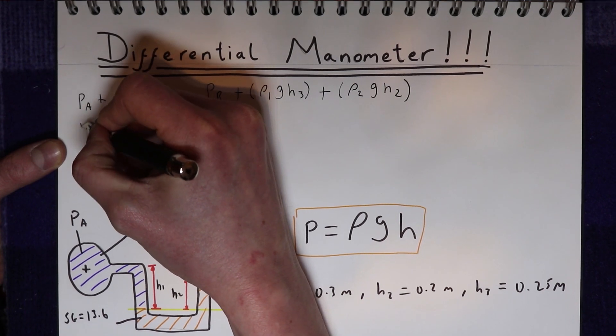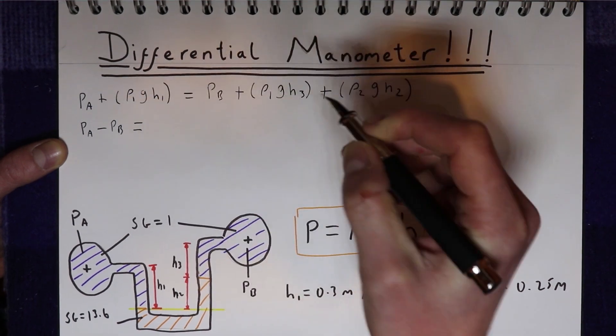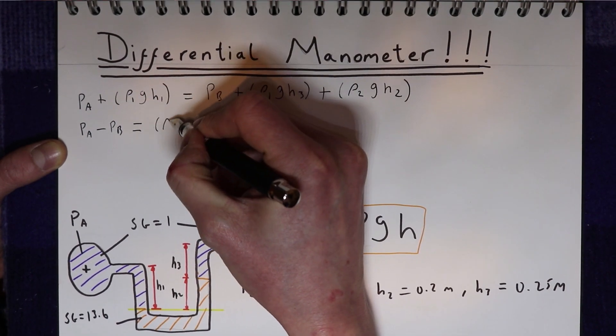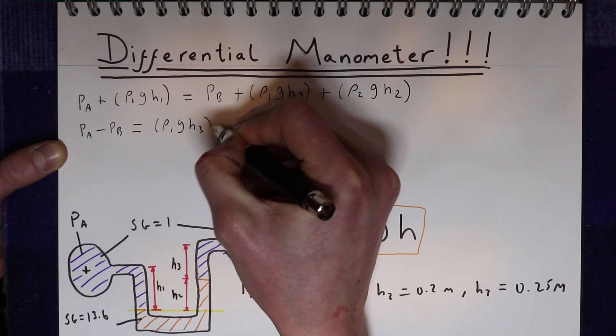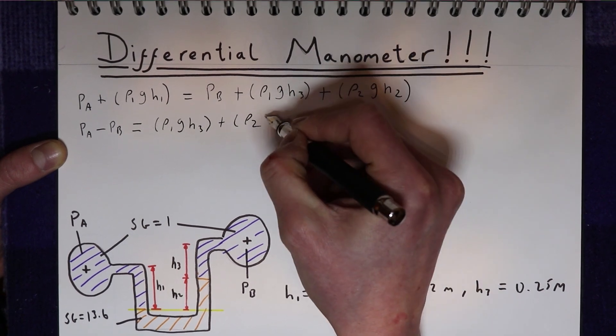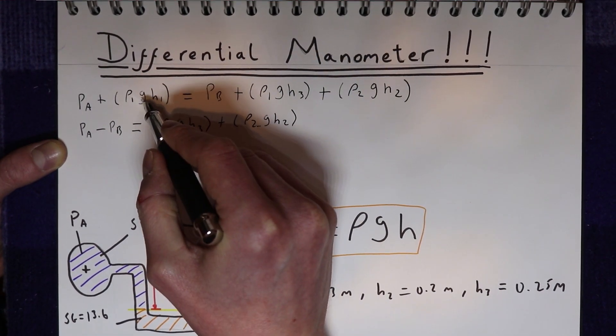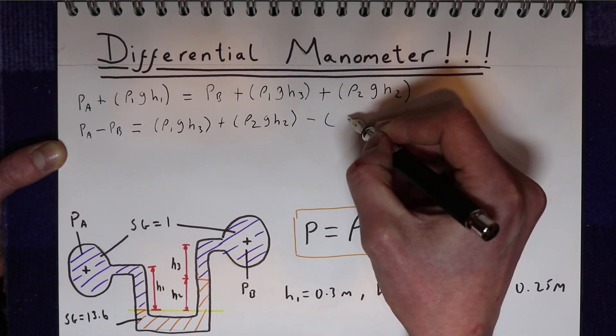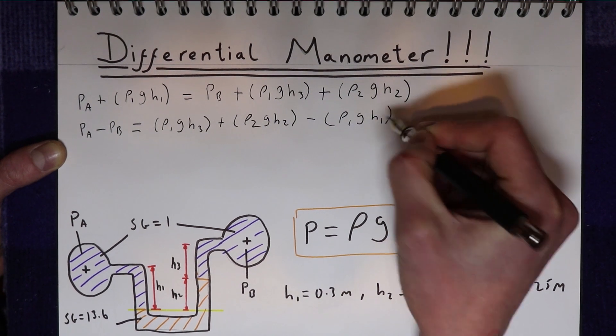So the pressure difference is Pa minus Pb, and that equals the density of water times gravity times H3, plus the density of mercury times gravity times H2. Then we're going to move this set of terms to the other side, so we're going to minus the density of water times gravity times H1.